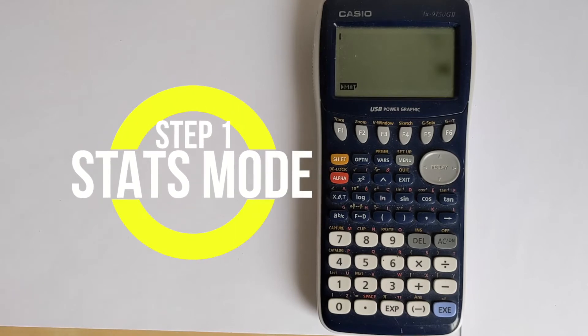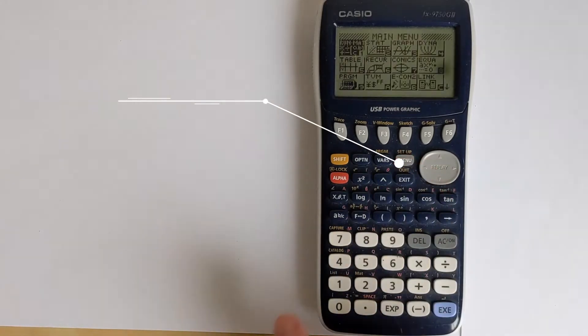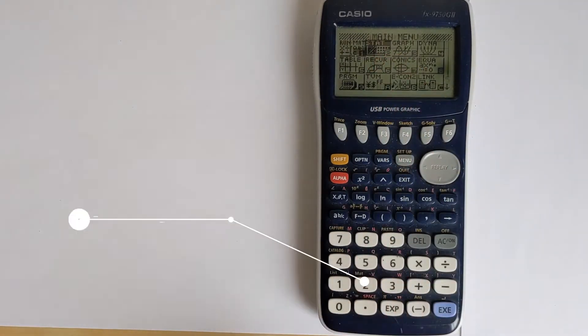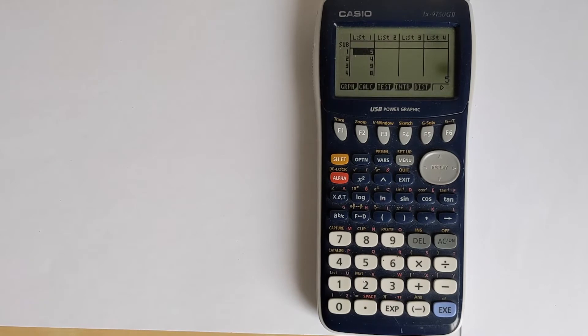The first step in doing this is to put the calculator into the right mode. Press MENU, and then if you go across, you've got mode 2, which is for STAT. So press number 2, and that puts you into the stat mode.